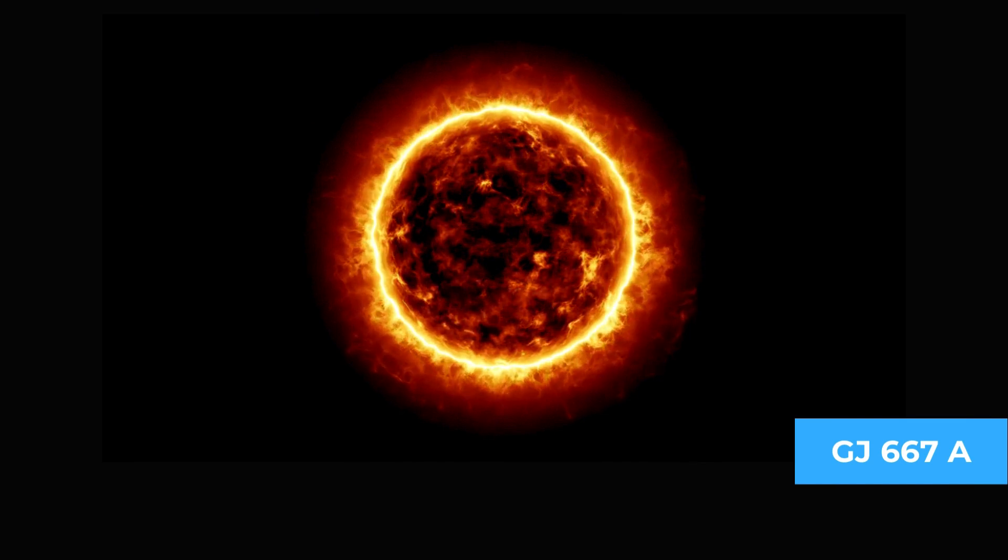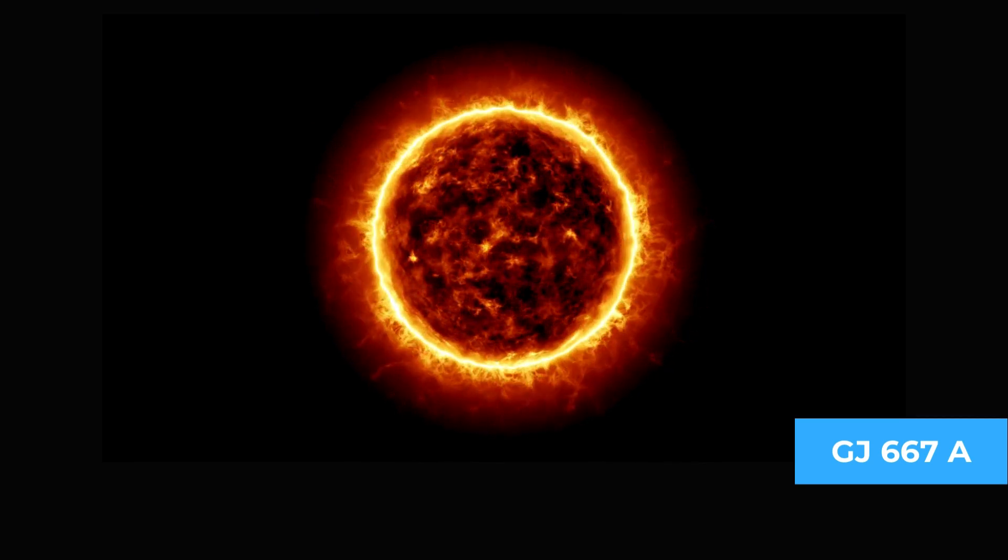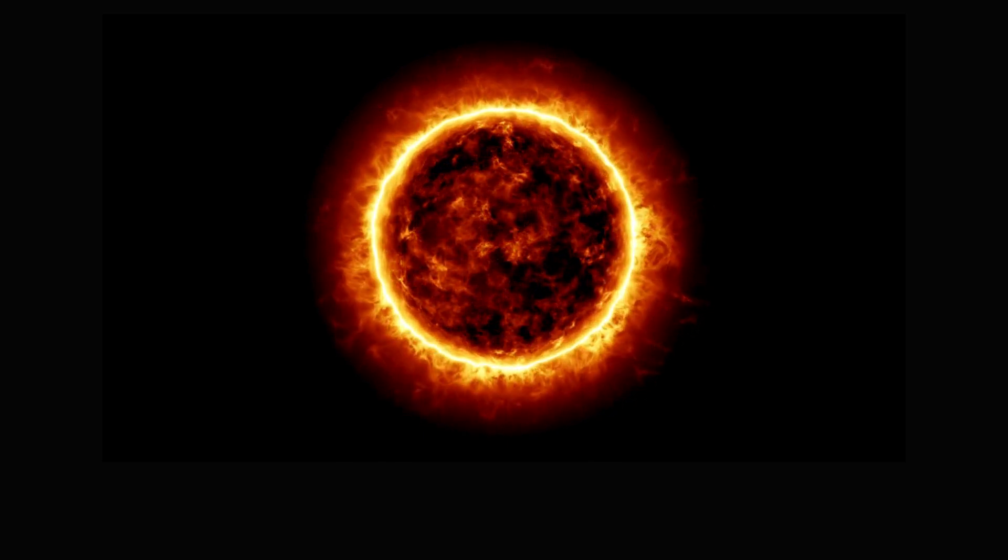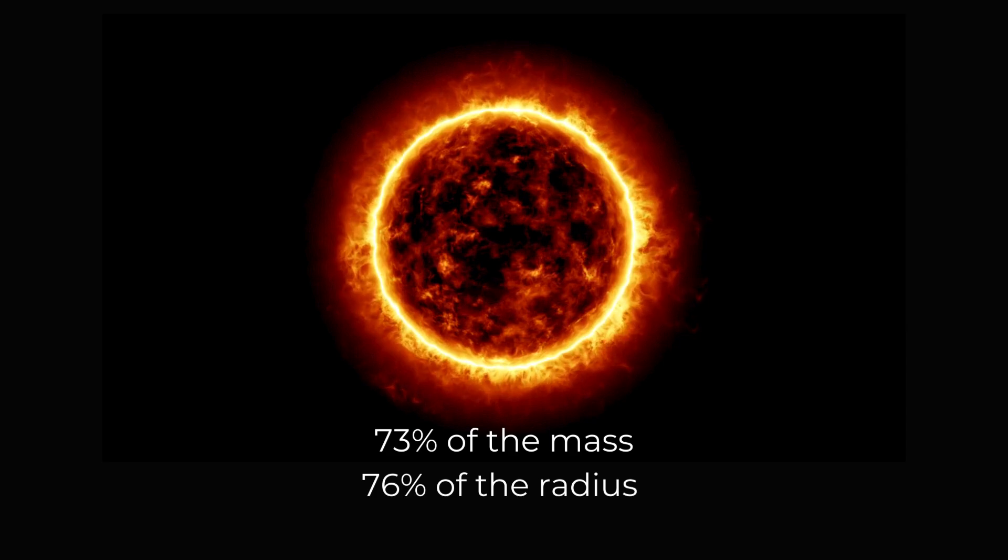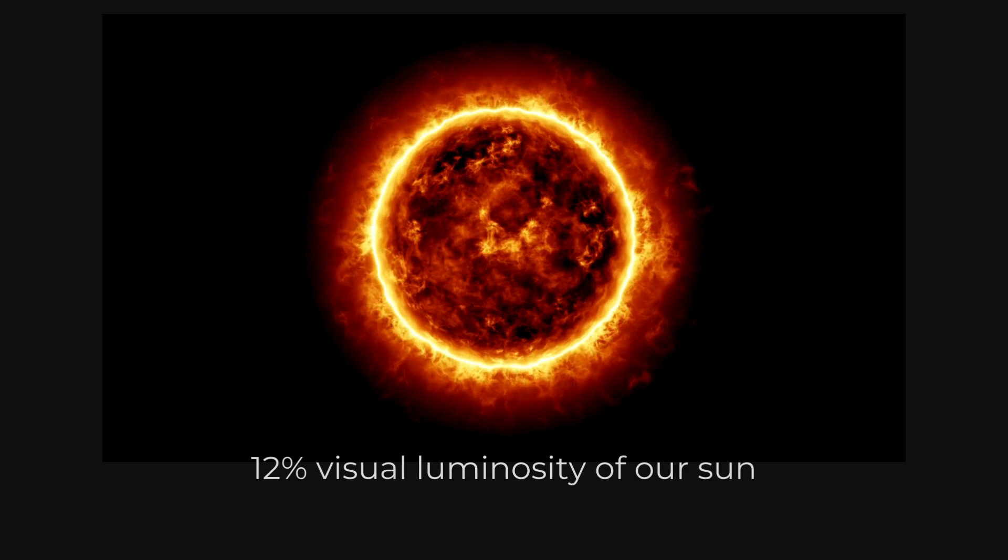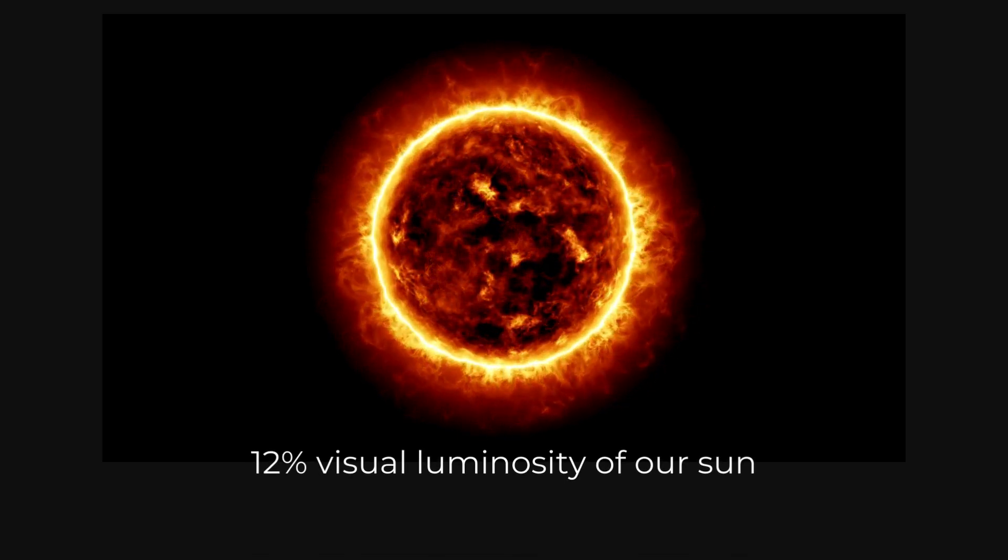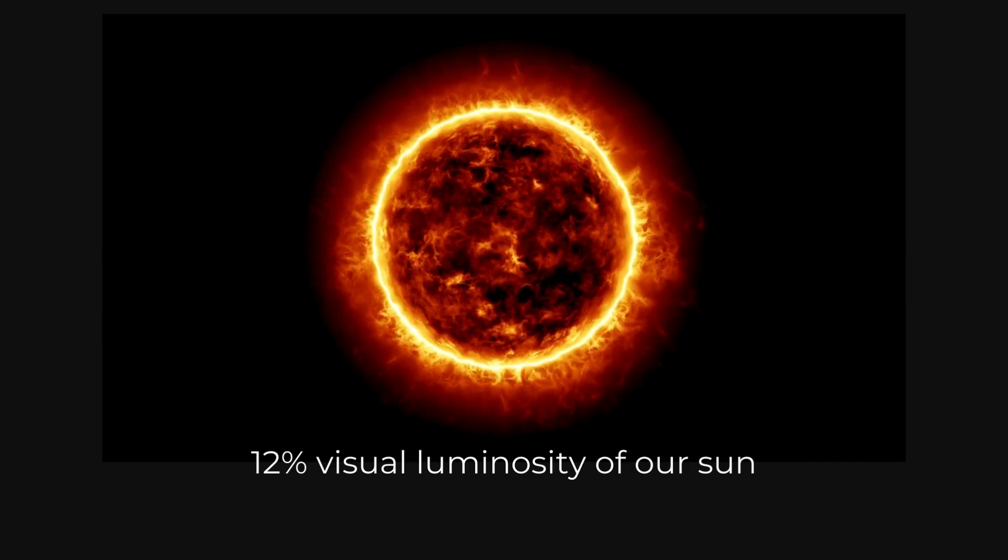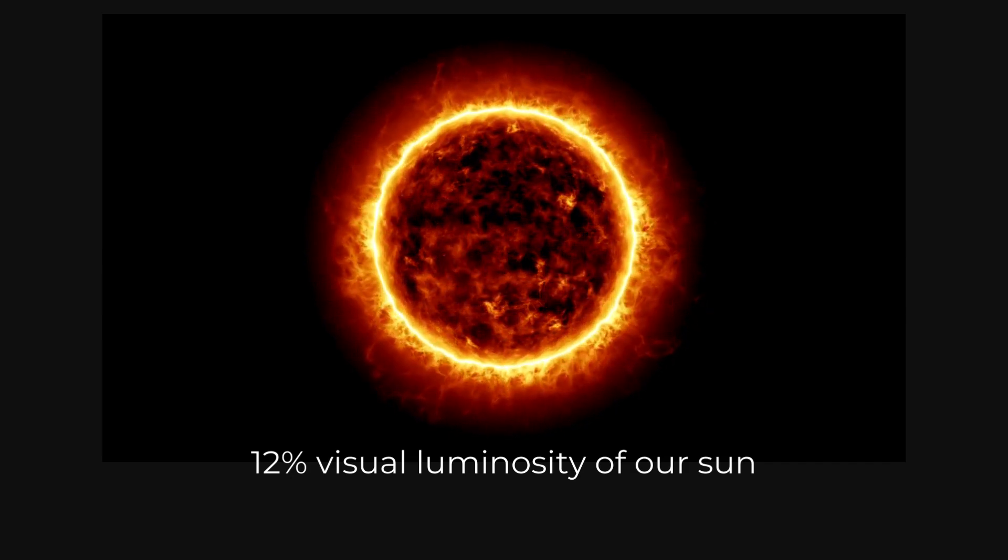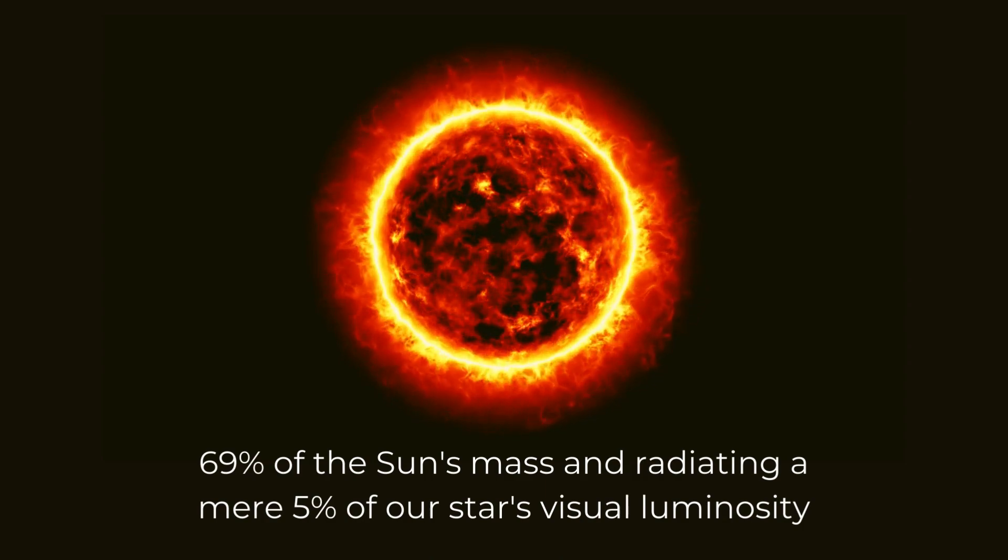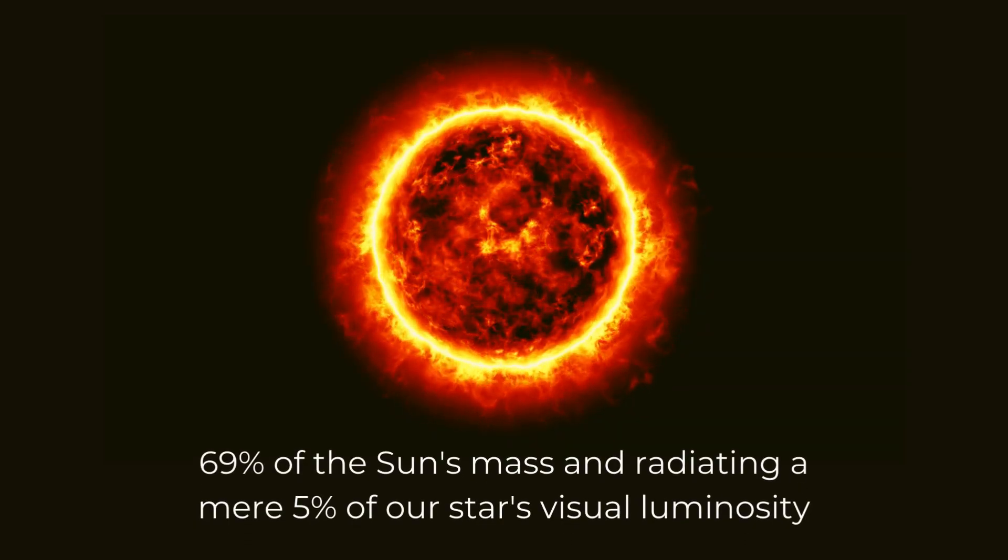GJ 667A, the most substantial star in the lineup, is a K-type main-sequence star, characterized by an orange-red hue. It holds 73% of the mass, 76% of the radius, and exhibits a visual luminosity only approximately 12% that of our Sun. Positioned at an average distance of 12.5 astronomical units (AU) is its companion, GJ 667B, another K-type orange-red dwarf with about 69% of the Sun's mass and radiating a mere 5% of our star's visual luminosity.